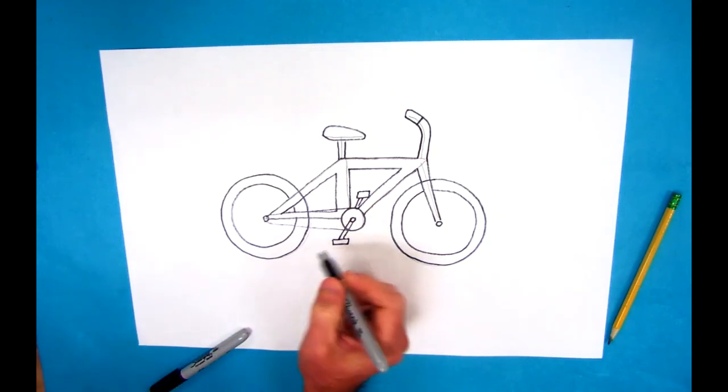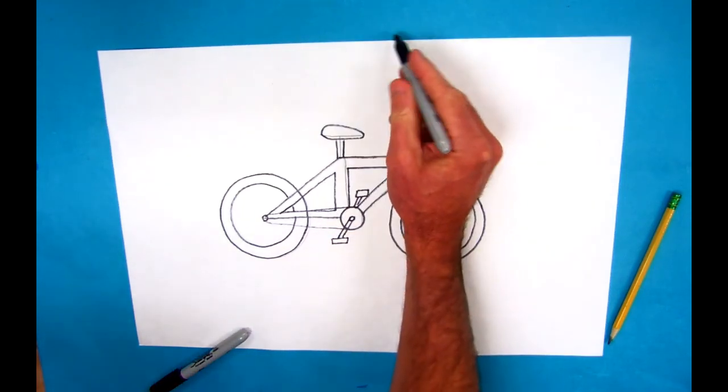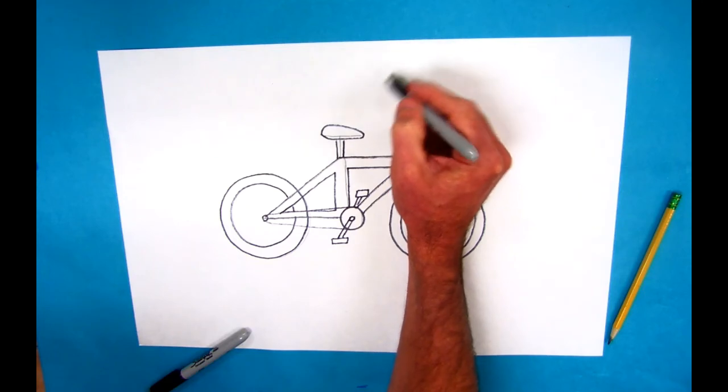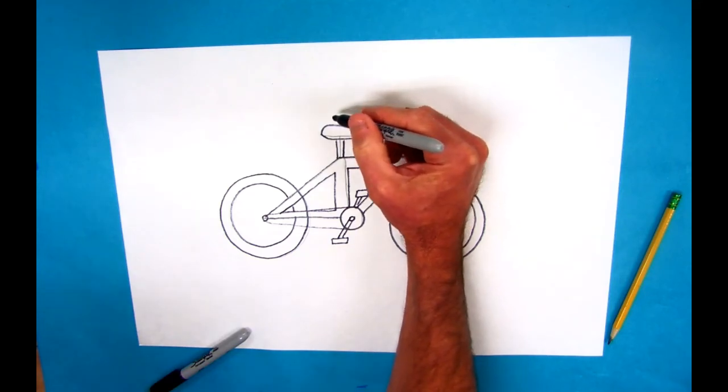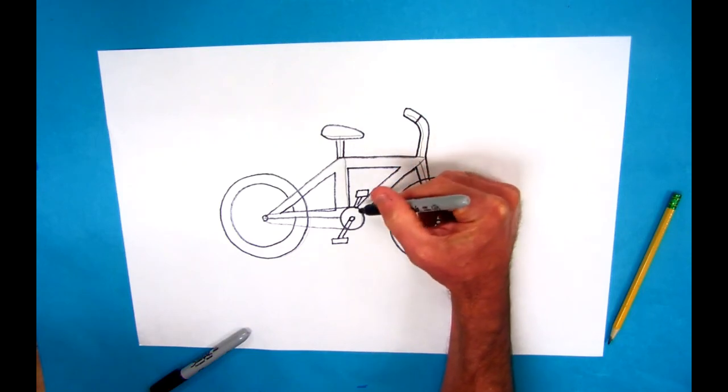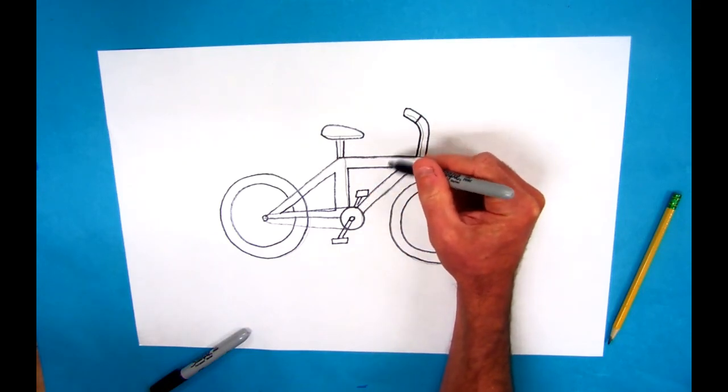There's something called a chain that goes from the crank to the rear hub. Pretty soon it's starting to look like a bike. If you wanted to put a person on this, I would start with their head and work your way down to where they're sitting, then figure out how their knees would connect to the feet.